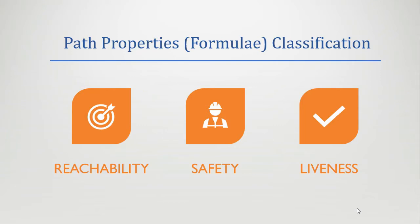These three types of properties or formulas are actually conditions, and the result of this condition is true or false. You are writing queries or properties, and then you will check these properties in your model. The result of this query will be true or false — satisfied or not satisfied. This property is an expression, and the result is either true or false, satisfied or not satisfied.